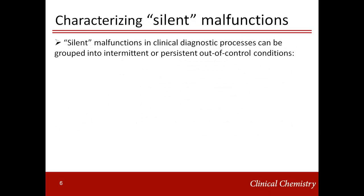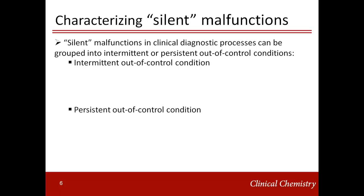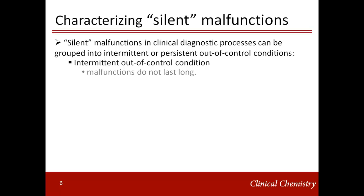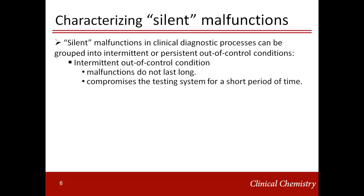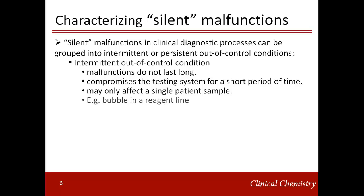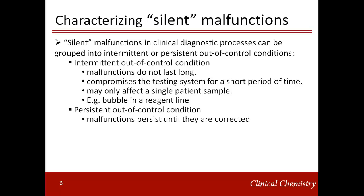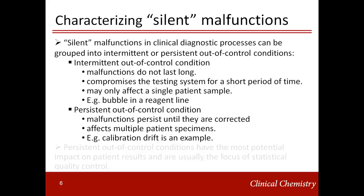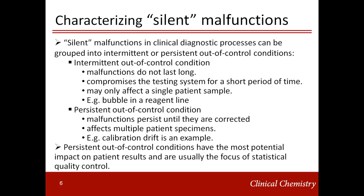Silent malfunctions can be grouped into intermittent or persistent out-of-control conditions. Intermittent out-of-control conditions do not last long — they compromise the testing system for a short period and may only affect a single patient result. An example is a bubble in a reagent line. Procedures such as delta checks, discordant checks, and many built-in instrument checks are designed to detect these, but intermittent out-of-control conditions are not the focus of this series. Persistent out-of-control conditions persist until corrected and affect multiple patient specimens — calibration drift is an example. These persistent conditions are usually the focus of statistical quality control.